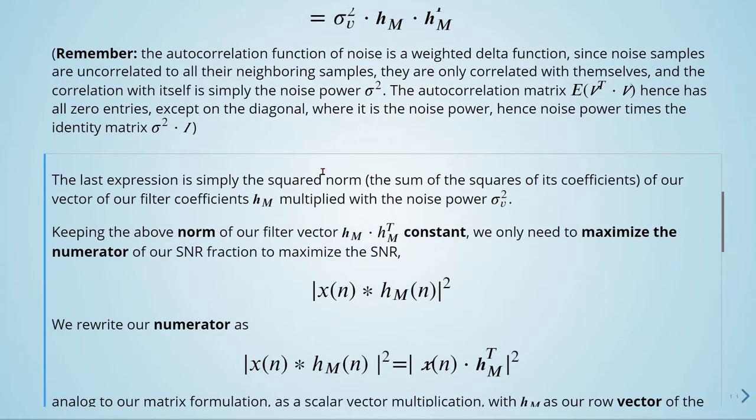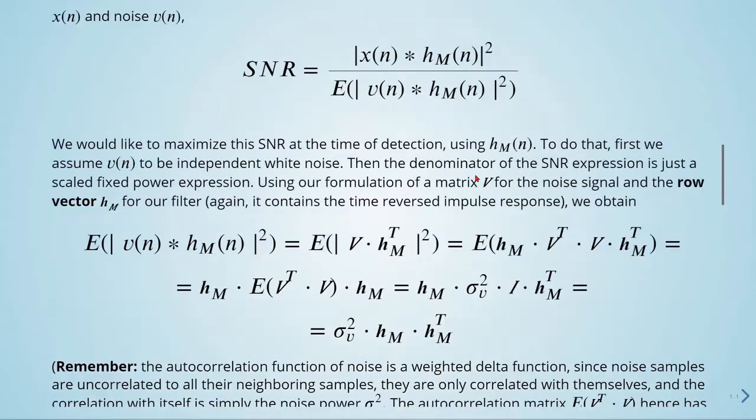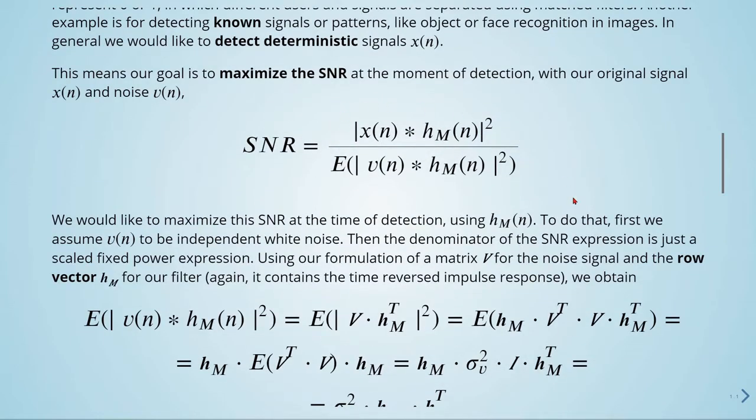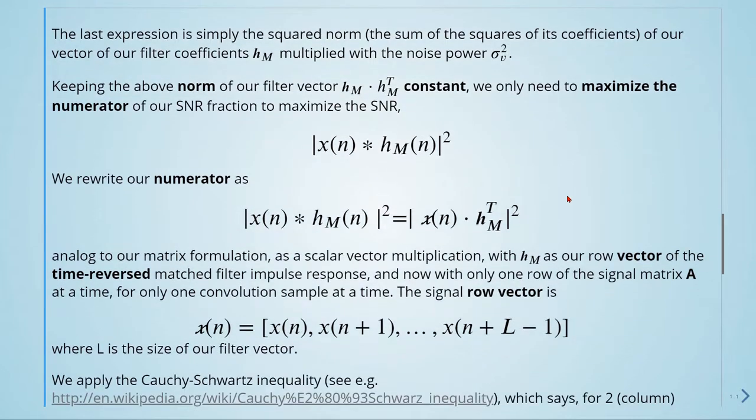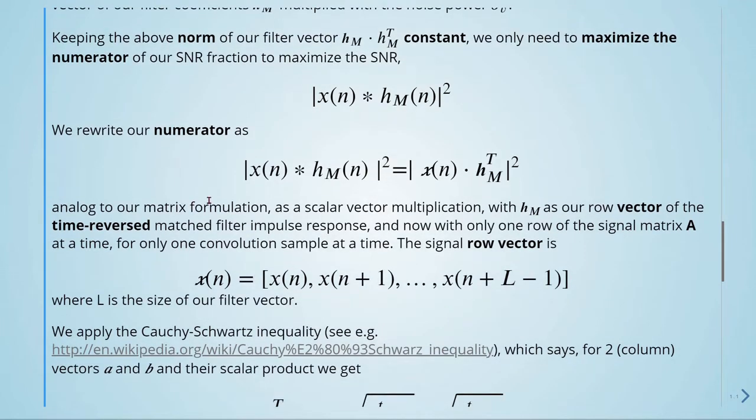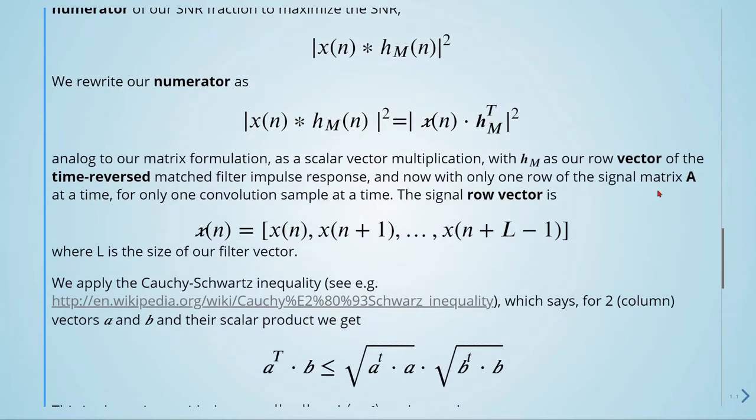Keeping the above norm of our filter constant, we only need to maximize the numerator of our signal-to-noise ratio fraction. And we rewrite our numerator from here to here, analog to our matrix formulation as a scalar vector multiplication with H_M as our row vector of the time-reversed matched filter impulse response, and now with only one row of the signal matrix A at a time, for only one convolution sample at a time. So the signal row vector is given by this, where L is the size of our filter vector.